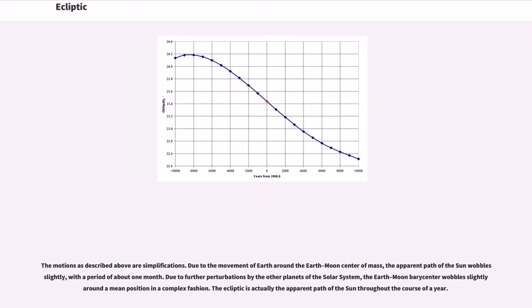The motions as described above are simplifications. Due to the movement of Earth around the Earth-Moon center of mass, the apparent path of the Sun wobbles slightly with a period of about one month. Due to further perturbations by the other planets of the solar system, the Earth-Moon barycenter wobbles slightly around a mean position in a complex fashion. The ecliptic is actually the apparent path of the Sun throughout the course of a year.